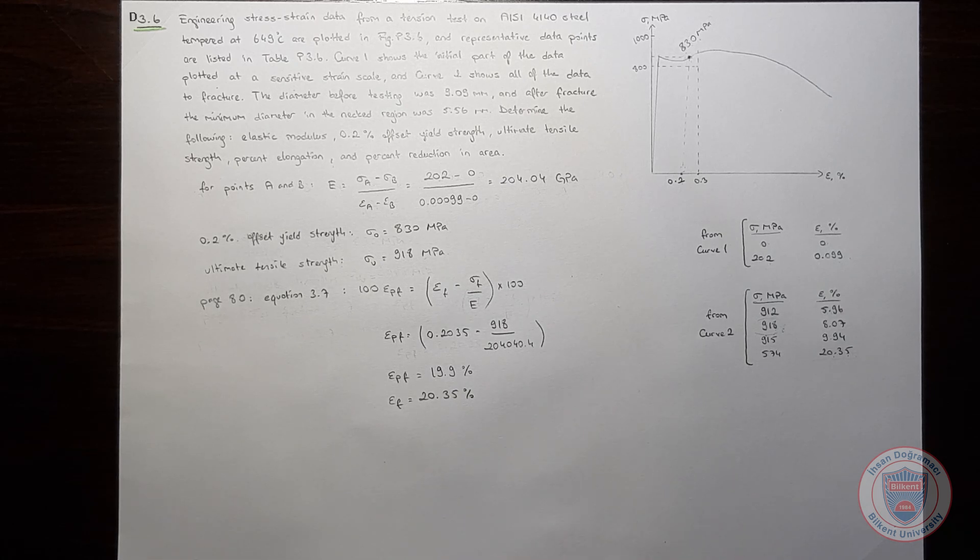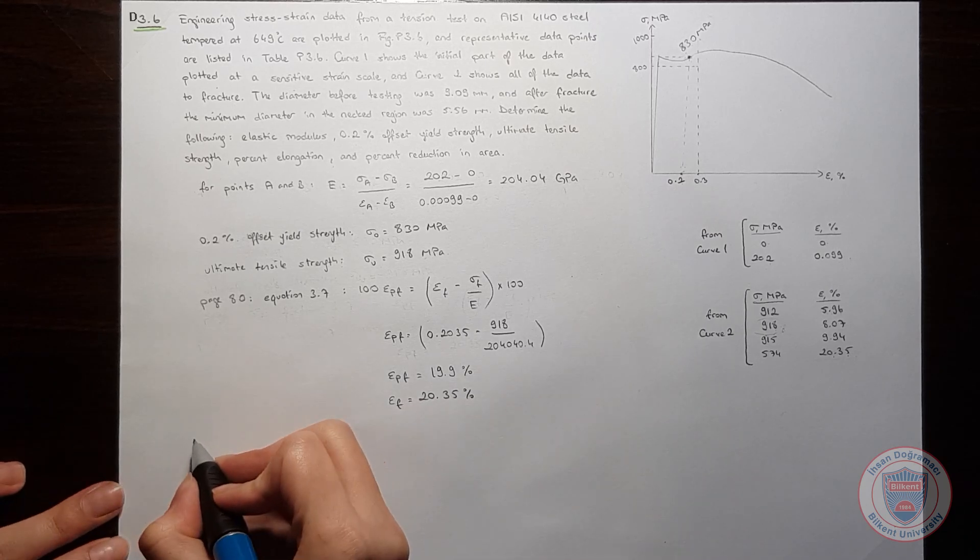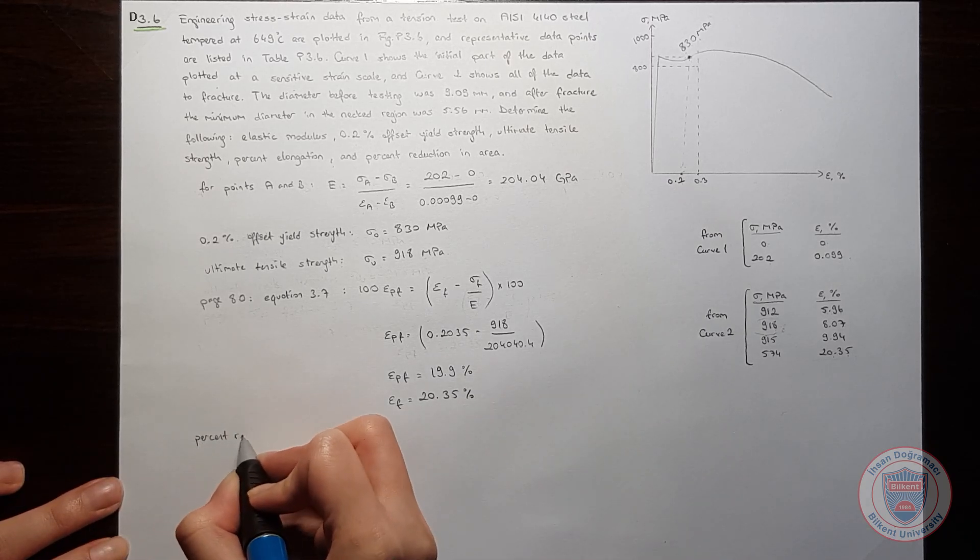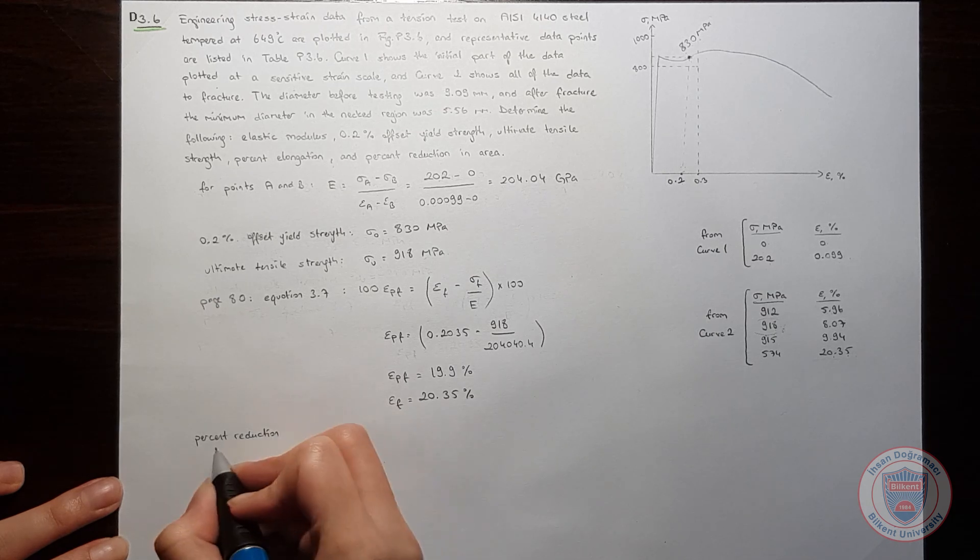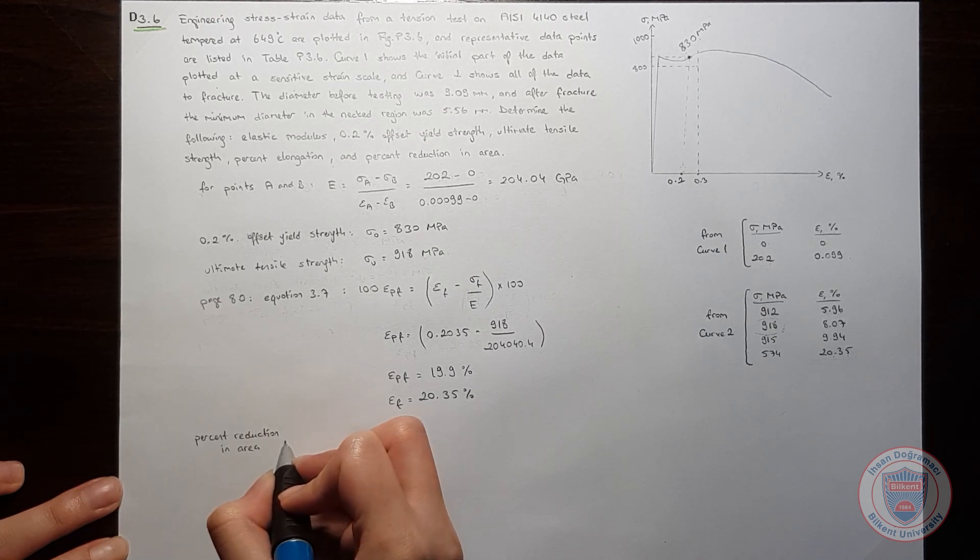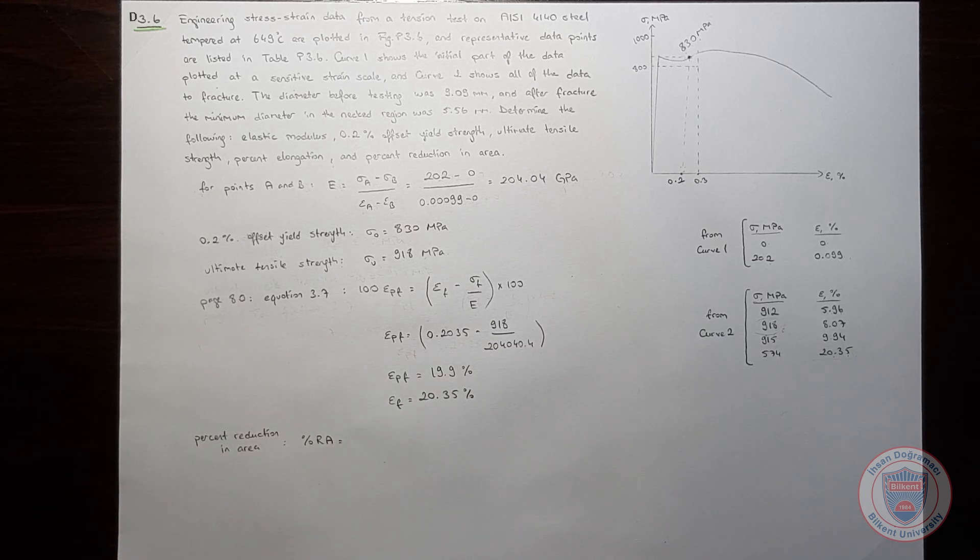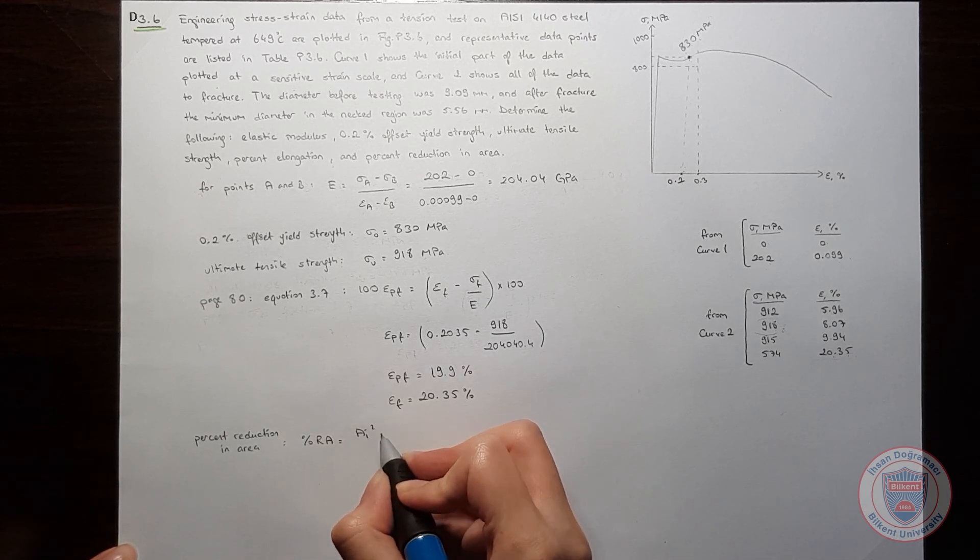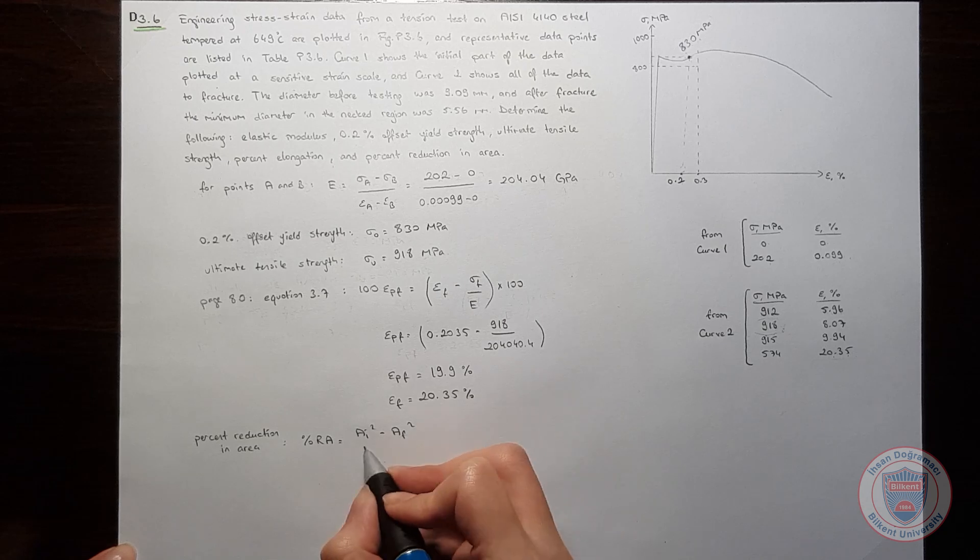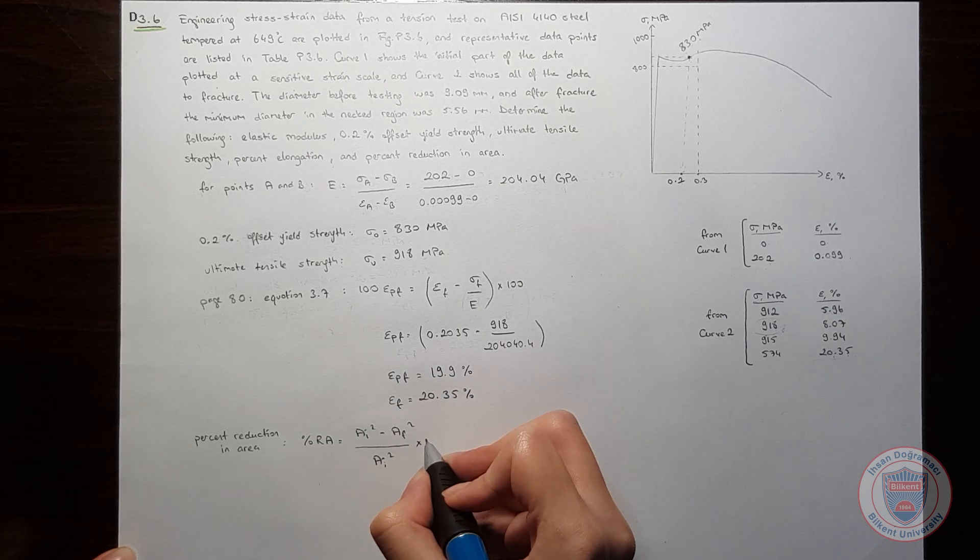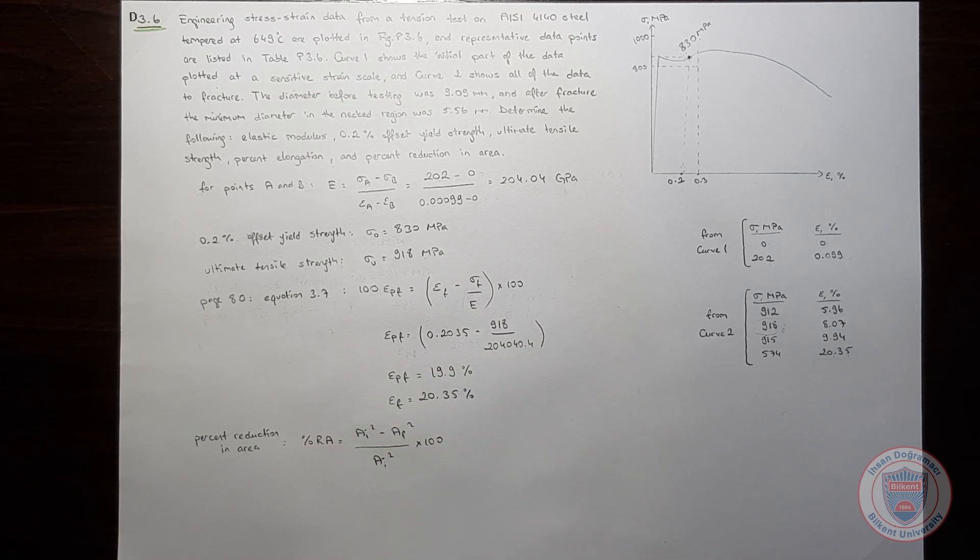Which is percent RA. We know that the percent reduction in area is the initial area squared minus final area squared over the initial area squared, and we multiply it by 100 to find the percent value. We can use diameters in this equation.